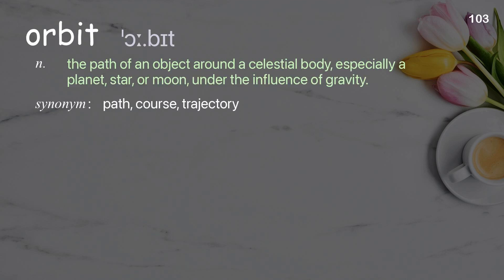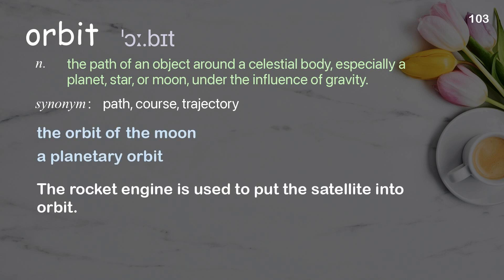Orbit: the path of an object around a celestial body, especially a planet, star, or moon, under the influence of gravity. Examples: the orbit of the moon, a planetary orbit. The rocket engine is used to put the satellite into orbit.